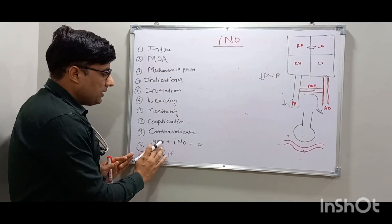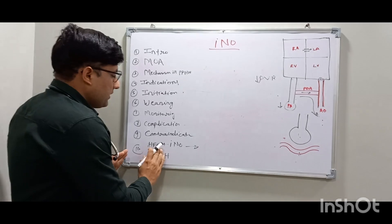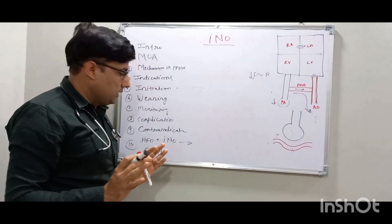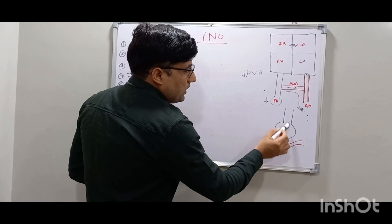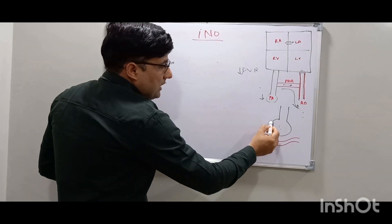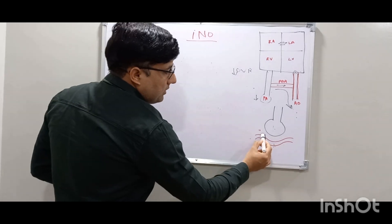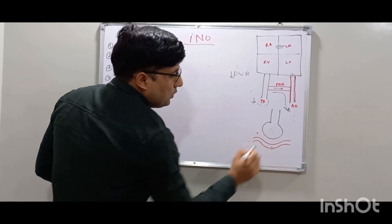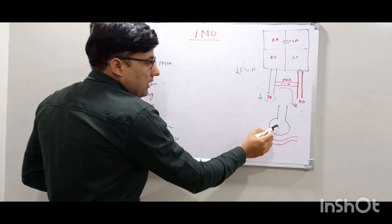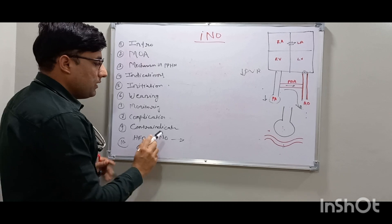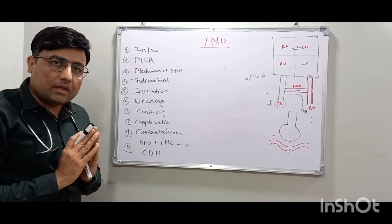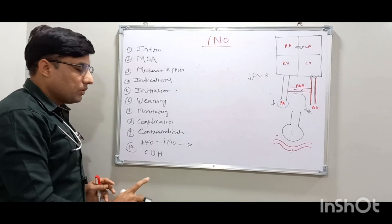iNO is better used in combination with HFO. HFO recruits collapsed alveoli — if alveoli are collapsed, iNO cannot reach the pulmonary vasculature and will have no effect. Once HFO recruits the alveoli, iNO can reach the pulmonary capillaries, dilate them, and improve VQ mismatch. So HFO and iNO have a synergistic effect. Before starting iNO, always recruit the lungs first; if lungs are not recruited, iNO will not be effective.